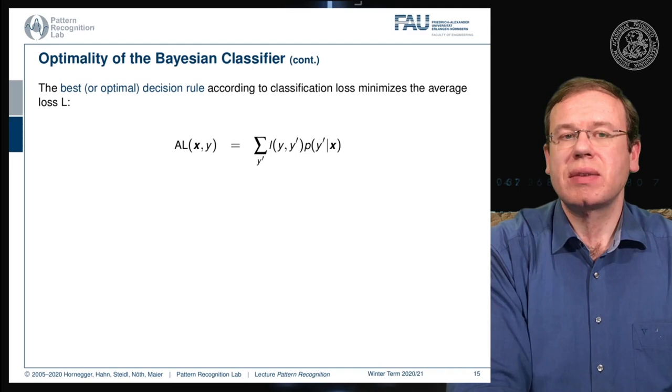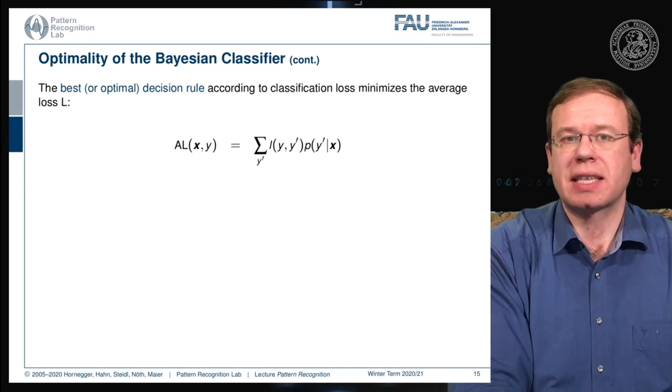We can write up the average loss as the expected value over the classes and then we have the loss times the probability of the respective class given our observation. So this is now essentially the average loss for a given observation x.